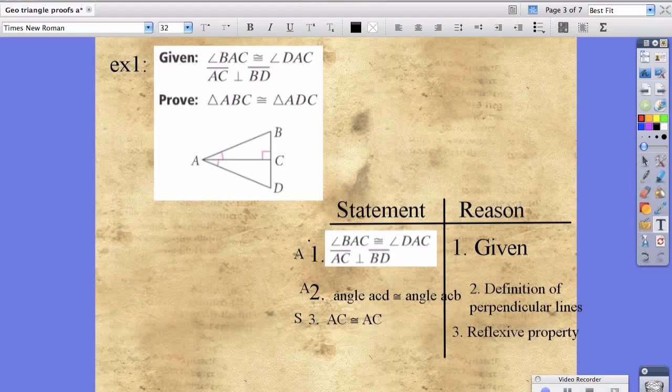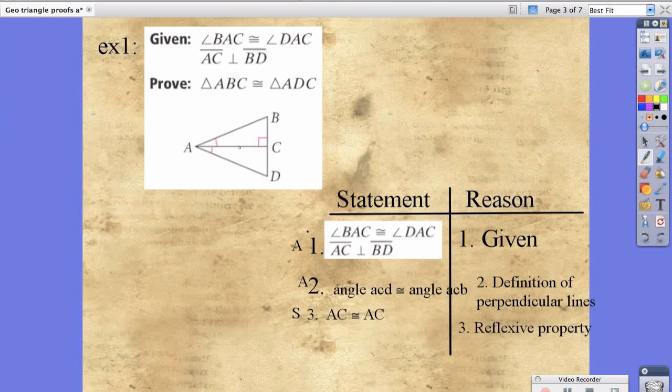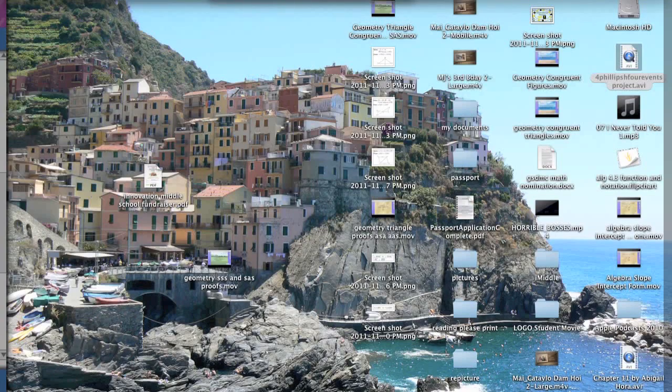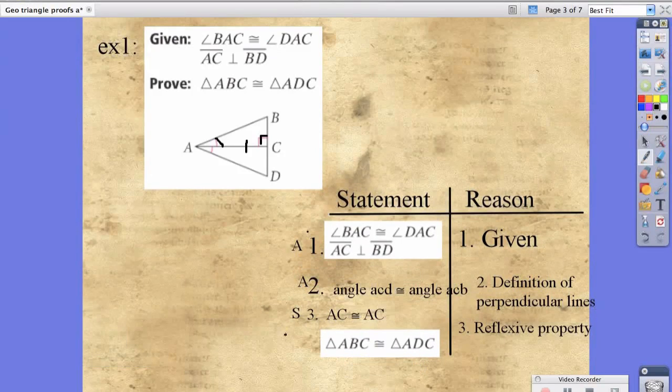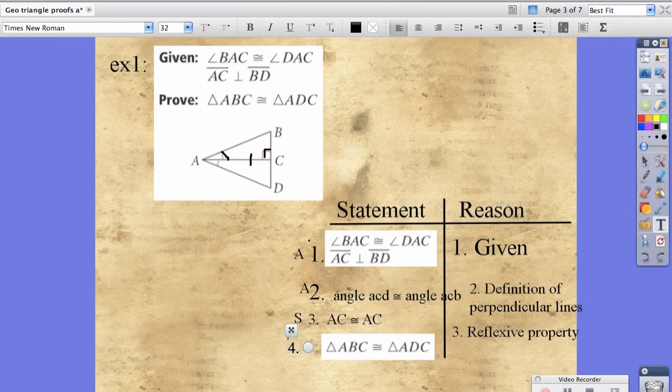Just because they're listed as angle, angle, side along the left side, doesn't mean that's what it is. We are going to highlight the picture. Here's our angle, here's our angle, and here's the side. You'll notice the side is in between the two angles. We could say, in line 4, that those two triangles are congruent because of angle, side, angle.